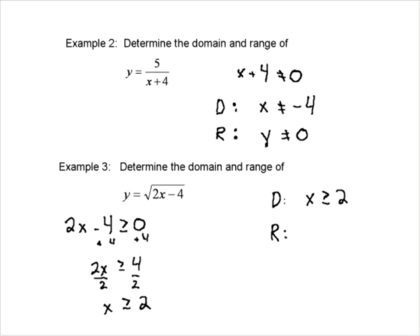What's our range? We have to go back and consider what the function is. It's a square root, and if we're taking the square root of a positive number — and we know it'll always be positive, or at least 0 or higher, because the domain has determined that — then you're always going to be taking the square root of a number bigger than or equal to 0. If you're taking the square root of any number, you're always going to get a value that is positive. We can't take the square root and get a negative value. So in this case, Y is always going to be greater than or equal to 0.